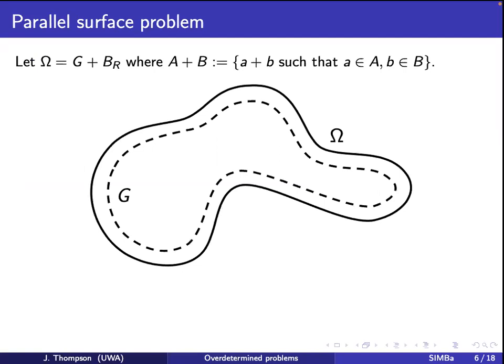Let's discuss the parallel surface problem. I want to think about a specific case where my omega is a particular type of region: I start with a region G, then take this Minkowski sum with a ball of radius R. This creates a region omega which is essentially G but moved outward.